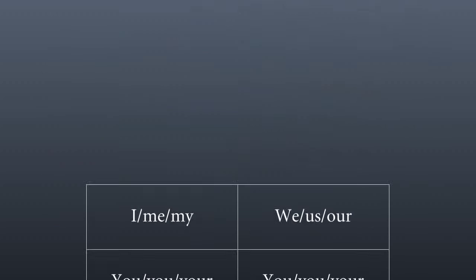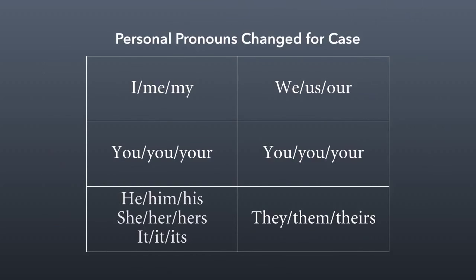Here's the table showing how English alters personal pronouns based on their case. First person singular is I, me, my. First person plural is we, us, our. Second person — both singular and plural — is you, you, your. Third person singular, depending on gender or nature of the object: he, him, his; she, her, hers; it, it, its. Third person plural is they, them, theirs, regardless of the nature of the noun.